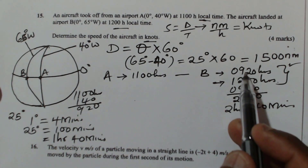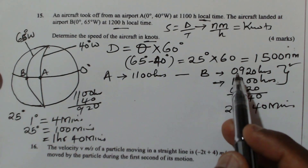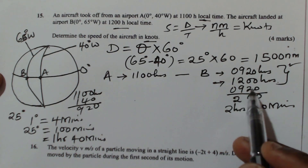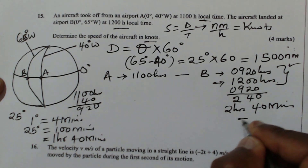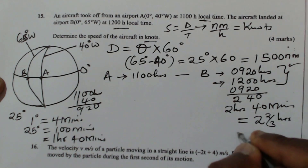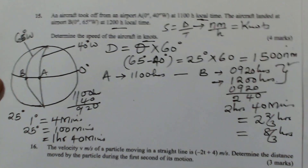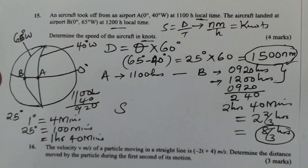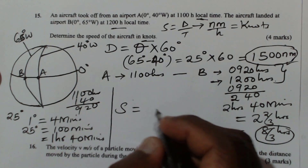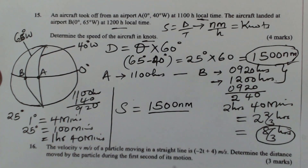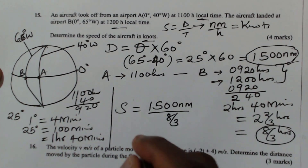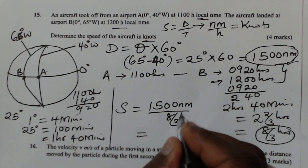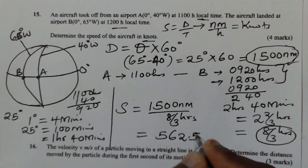To get the time taken, 12:00 hours minus 09:20 hours gives 2 hours 40 minutes. 2 hours 40 minutes is equivalent to 2 and two-thirds hours, which is the same as 8 over 3 hours. Now, having the distance of 1500 nautical miles and the time of 8/3 hours, the speed is 1500 divided by 8/3, which gives 562.5 knots.